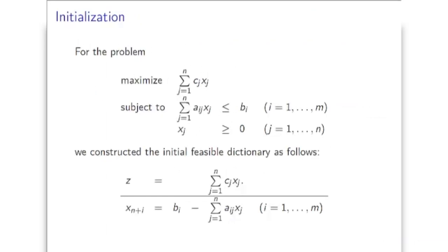In the previous lecture we discussed the potential issues that we may have with the simplex algorithm, and we saw that we may have a problem with initialization. All the steps of the simplex algorithm were performed assuming that we start with some initial basic feasible solution, and as our initial basic variables we just use the slack variables in the previous examples. However, as we already mentioned, we may have a problem with that.